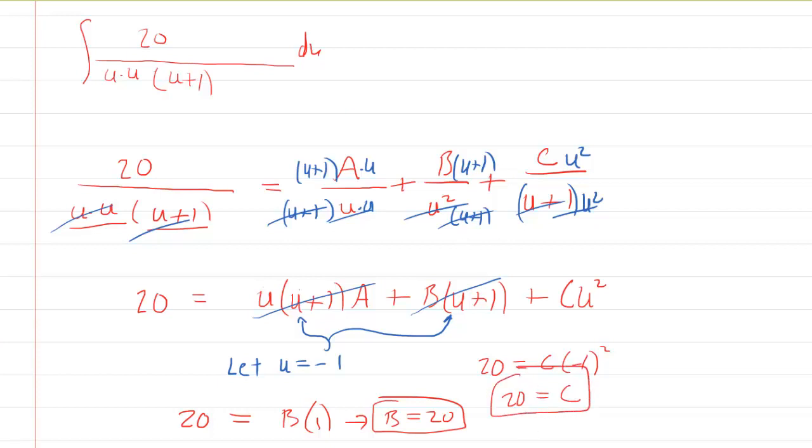We don't yet have the value of A, though, do we? So we still have a little bit of work ahead of us. Let's figure out a way to get the value of A. And I suppose, really, the only way to do that is to multiply things out a little bit at this point. So we'll have 20 equals. Now we'll put this u in. So that'll give us u squared plus u times A. Plus, we'll put the B through. So we'll have Bu plus B and then plus Cu squared.